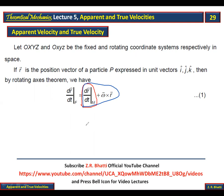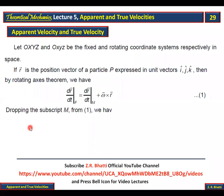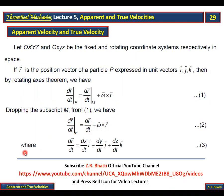This relationship holds because the coordinate system is rotating. Dropping the subscript M, we have DR/DTF is equal to DR/DT plus omega cross R, where DR/DT is taken in the moving coordinate system.